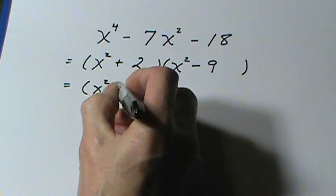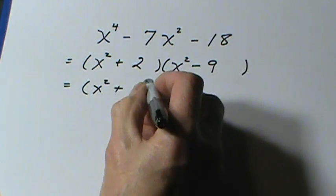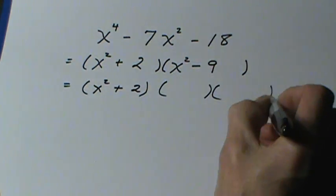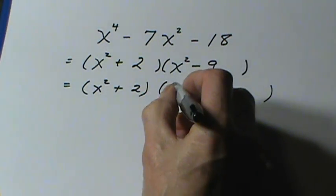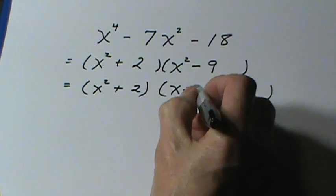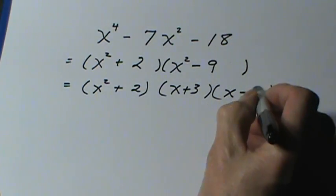The x squared plus 2, I'm just going to repeat here. This, however, is a difference of squares again. So we have x plus 3, and x minus 3.